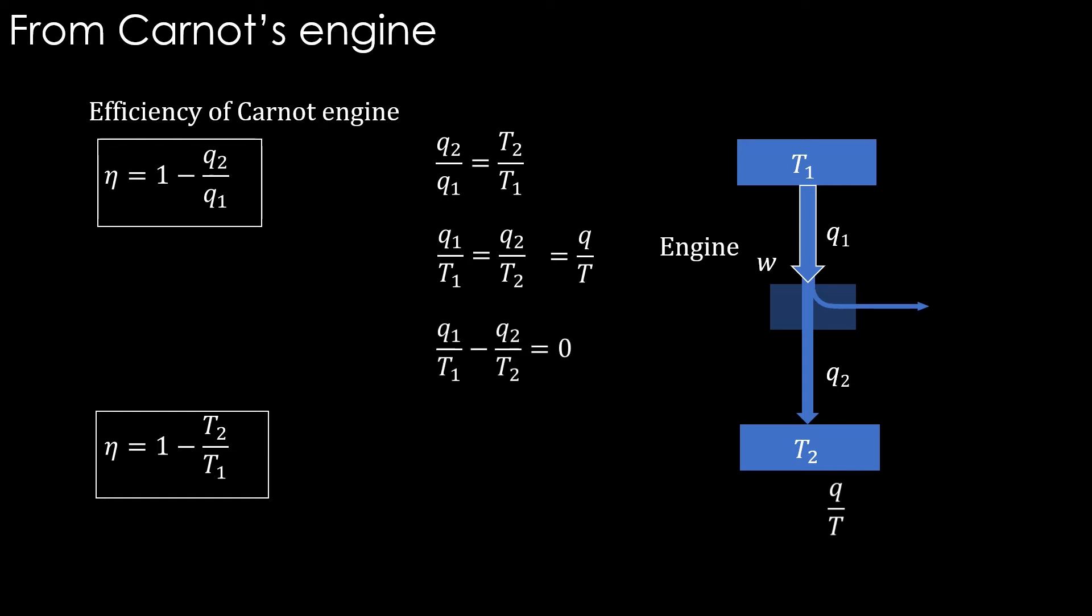If you think about what is this difference, it is basically the summation of Q divided by T over the entire cycle.